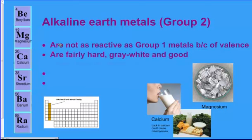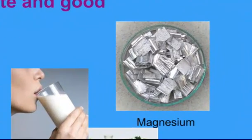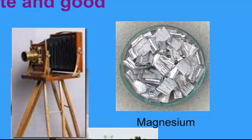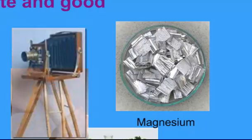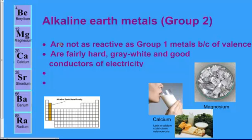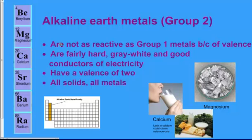Alkaline earth metals are fairly hard, gray-white, and good conductors of electricity because they're metals. They're malleable and pretty shiny — if you look at the magnesium picture, it's very shiny. Magnesium is an essential element in your body. In class we'll burn magnesium, which burns very bright white — it was used in old-school flash photography in the early 1900s where magnesium powder was lit on fire for photos, and it's also used in fireworks for that bright white light. They all have a valence of two and are all solids and metals.